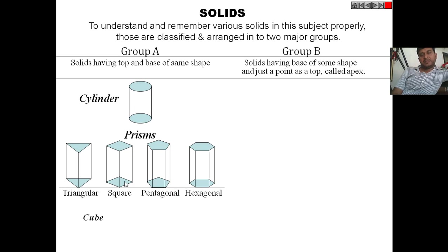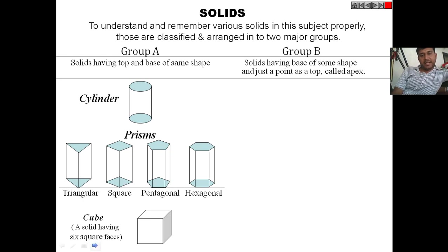If we have a solid with six square faces, meaning the length, width, and height are all the same, then it is called a cube.